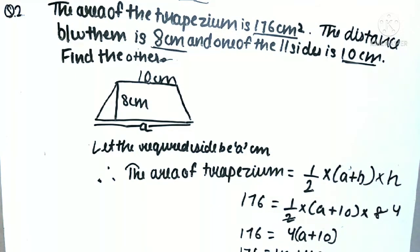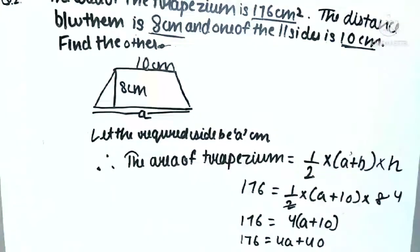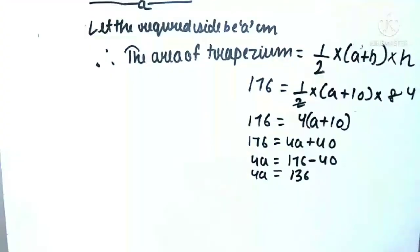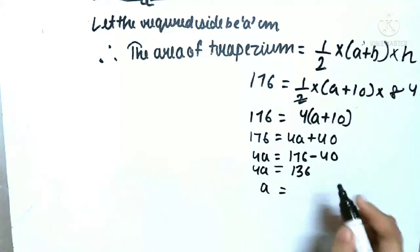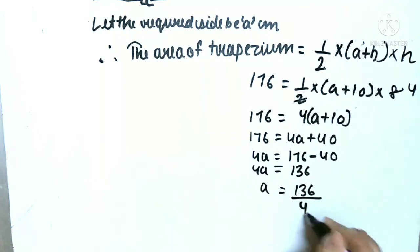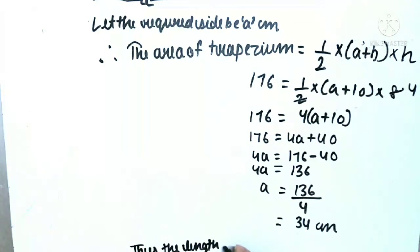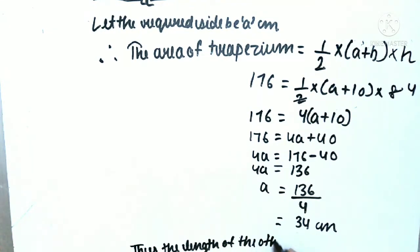So the answer will be 136. 4a is equal to 136, now a will be 136 upon 4. After canceling it out we will be left with 34. Thus the length of the other side is 34 centimeter.